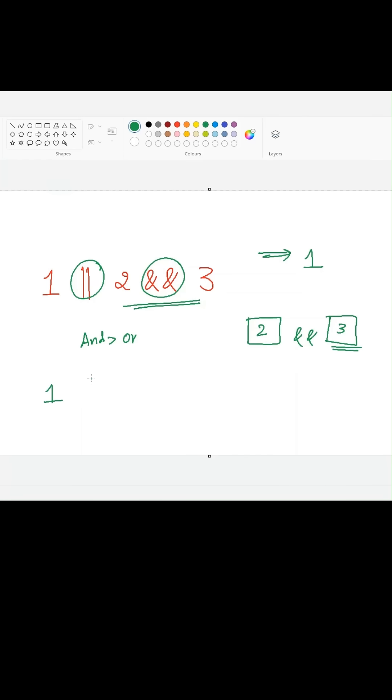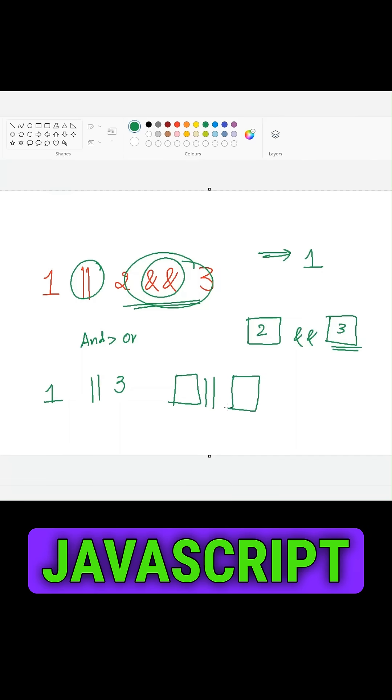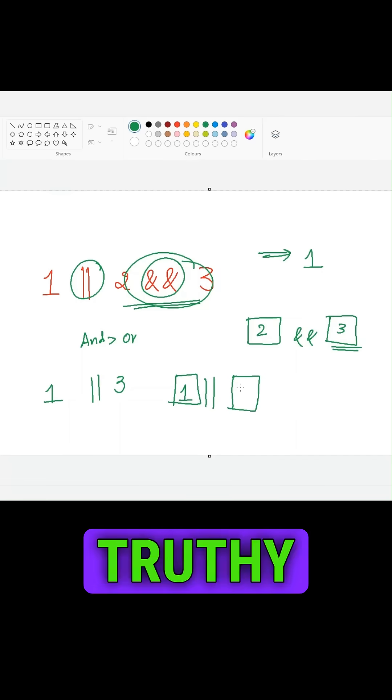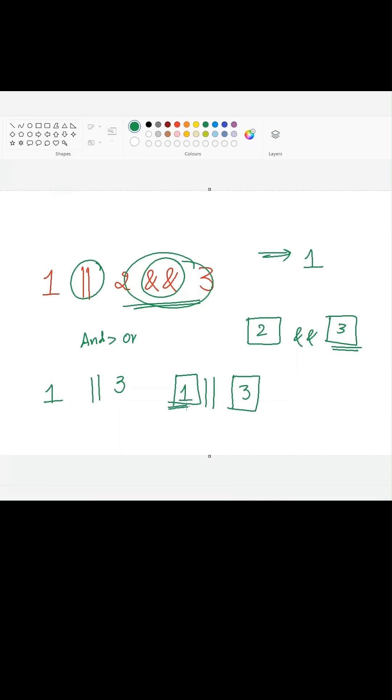So our expression will become 1 or 3. Whenever we are using the or operator between two truthy values, JavaScript will take the first truthy value as the preference. So 1 will be returned here. Due to this reason, 1 will be the output.